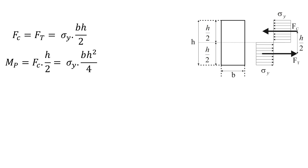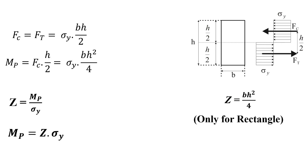The plastic section modulus Z equals Mp over sigma_y, thus Mp equals Z times sigma_y. In other words, the plastic section modulus relates the yield stress sigma_y to the plastic moment Mp. For a rectangular cross-section, the plastic section modulus is Z equals base times height squared over 4.